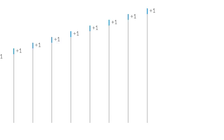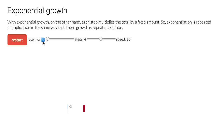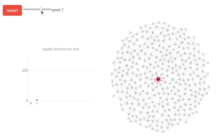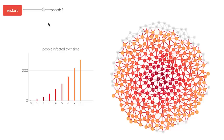Scrolling down a bit, you'll see a similar visualization, but this one demonstrates exponential growth. If you set the rate of growth at four, you'll see that each step is four times the previous, and by the tenth step it's over a million times larger — the first five steps are so small in comparison that you can't even see them. There's also a demonstration of how infections spread exponentially until they've affected the whole population.